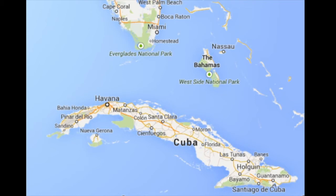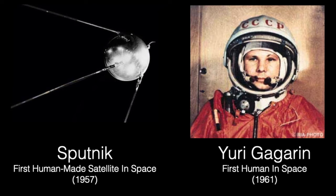And communism was also spreading into outer space. Which country was the first in human history to successfully launch a man-made satellite into outer space? That honor belongs to the Soviet Union, which launched Sputnik into outer space in October of 1957. Sputnik, the Russian word for 'travel buddy,' would orbit the earth and it would blink — so you could see it. You could stand in a cornfield in the middle of Ohio, look up at the night sky, and see little blip, blip, blip — Sputnik going around the earth.